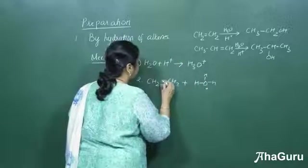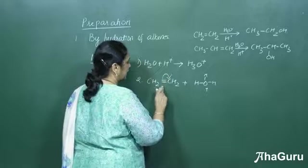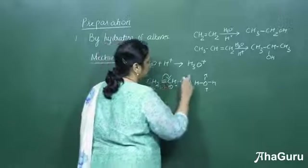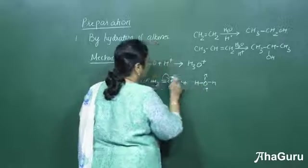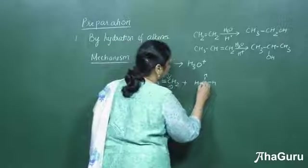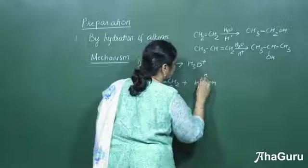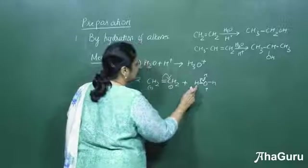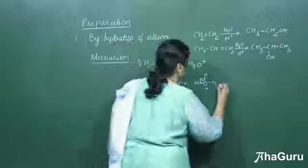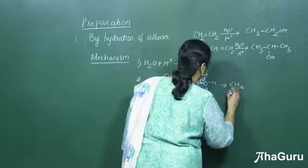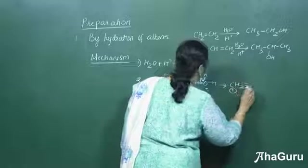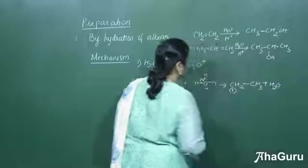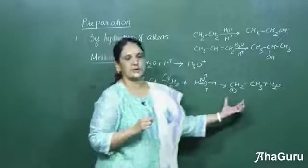The double bond electrons shift so that one carbon becomes negative and the other becomes positive. The proton gets attached first, releasing water. This electron moves into the oxygen, and H⁺ is released. The H⁺ attacks the CH₂, giving CH₂⁺ — single bond — CH₃, plus H₂O. So a carbocation is formed here.